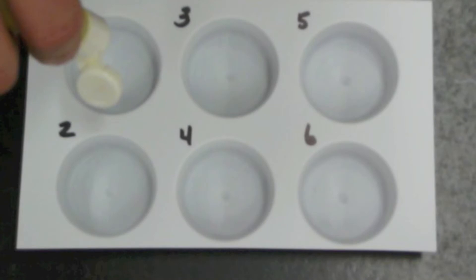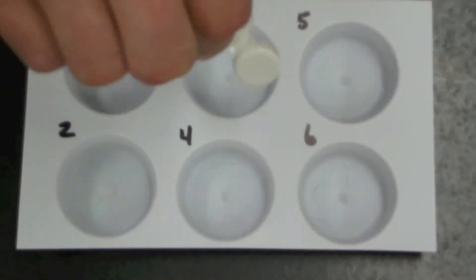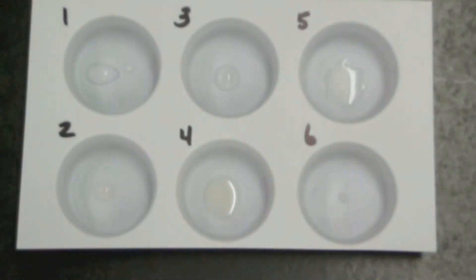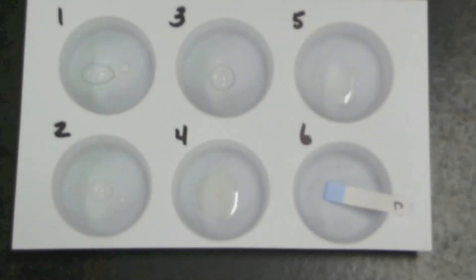First we'll add all of our liquids to each section. The strip that I just put in section six is called a control. We'll look back at this strip to see if anything has changed after we add our liquids to each of the strips.